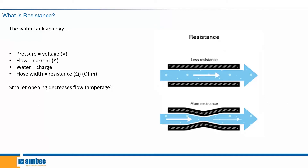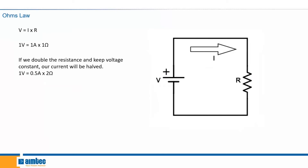Now putting these three basic terms together, we get what we call Ohm's Law. Ohm's Law connects voltage, current, and resistance together in the following equation. If we use one volt, one amp, and one ohm for all three units, we'll have: one volt equals one amp times one ohm. So if you increase the resistance by two, you'll need to decrease your amperage or current by two to have the same one volt that you had initially.